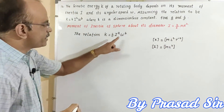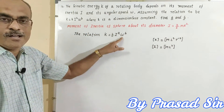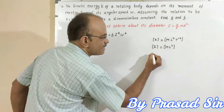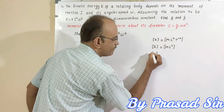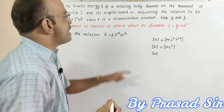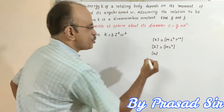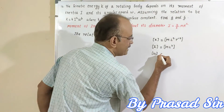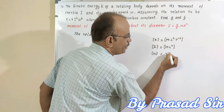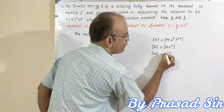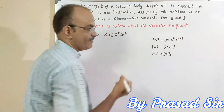Then afterwards, omega. Omega is the angular speed, and the dimensional formula for angular speed is T to the power of minus 1.